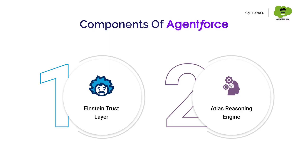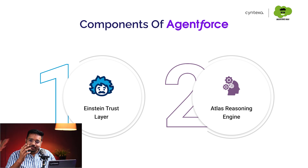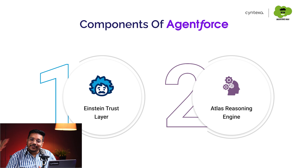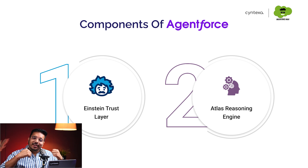Components of agent force. We have two components of it. The first one is Einstein Trust Layer. What Einstein Trust Layer is, this is something that we have covered in our previous webinar. If you want to know it in much more detail, you can go over there and actually see it.